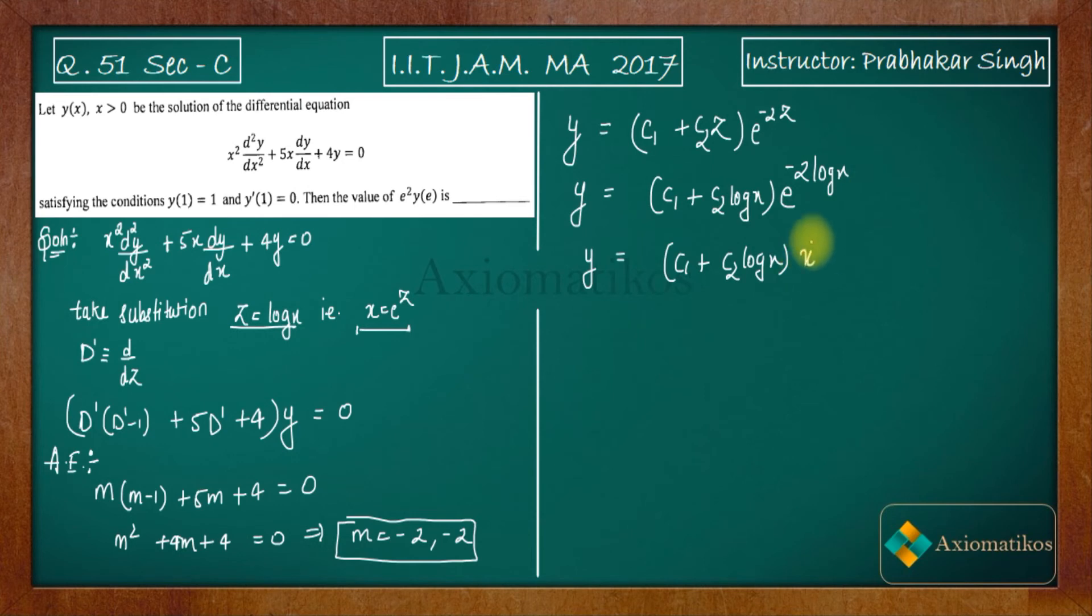Now use these two things: y(1) = 1 and y'(1) = 0. Use these to find out the coefficients c₁ and c₂. You have to differentiate it, so you will get two equations. Put y(1) = 1 in this equation and in the differential equation put y'(1) = 0. After calculating you will get c₁ and c₂.